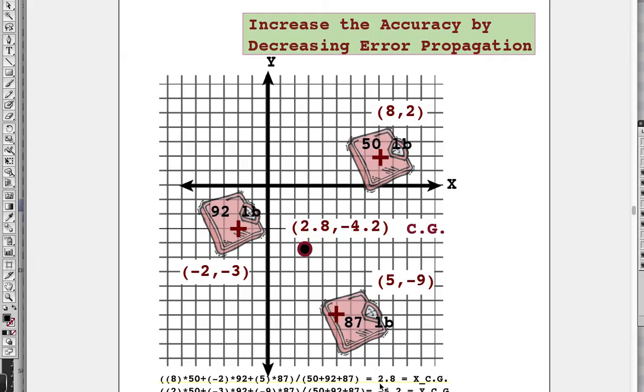Could we increase the accuracy by decreasing the error propagation? By accuracy, what we mean is: where is the true CG? Is it right here in the center of this dot or outside here within my measurement uncertainties? What could we do when we place the grid on this system to decrease error propagation? We cannot get rid of any terms in the denominator, but we might be able to get rid of some terms in the numerator.